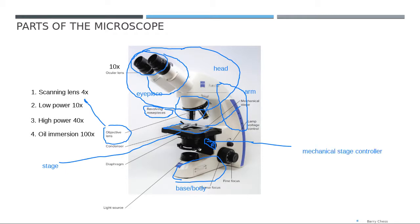You will also see two knobs: a bigger one and a smaller one. The bigger one is called the coarse focus and the smaller one is called the fine focus. When you turn the coarse focus knob, it will bring the stage up and down. The fine focus also brings the stage up and down, but with a very smooth movement.